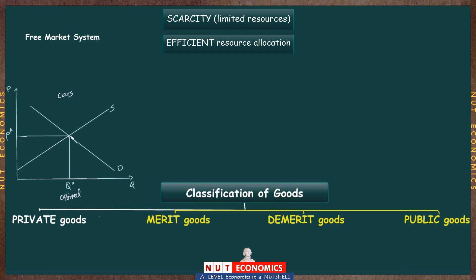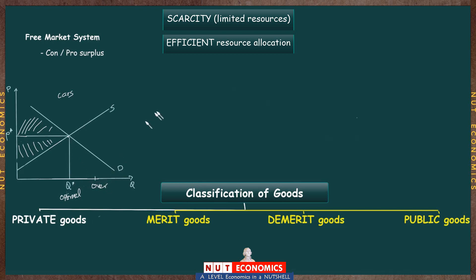Once we understood how the free market works, we introduced the concept of consumer and producer surplus. Through that concept, we technically showed that the equilibrium quantity Q* is the one at which consumer surplus and producer surplus are maximized, reinforcing that this is the optimal quantity. We showed that producing more than Q* leads to over-production and over-allocation of resources, while producing less than Q* leads to under-production — both reducing society's total welfare.